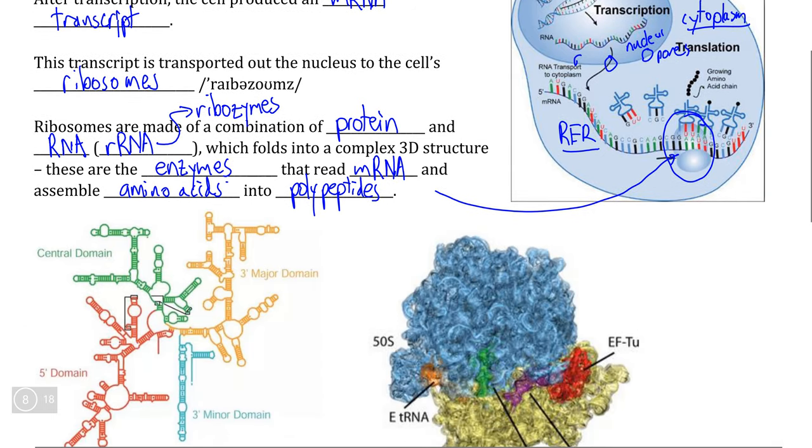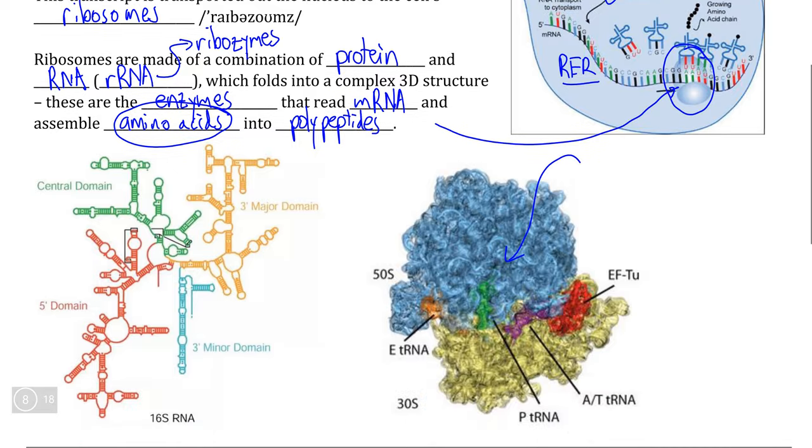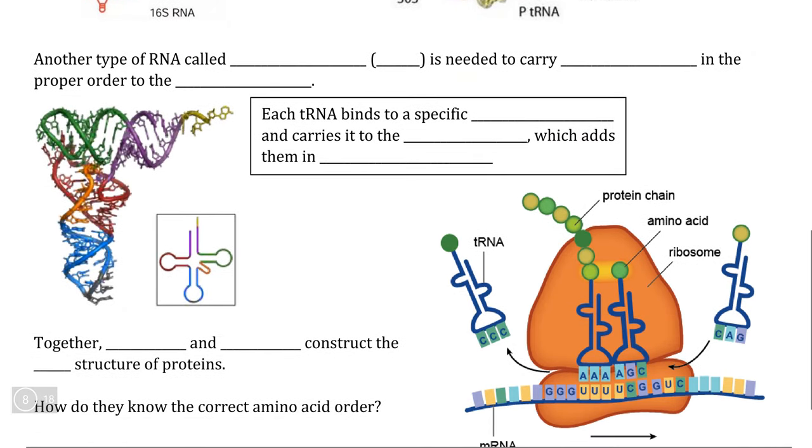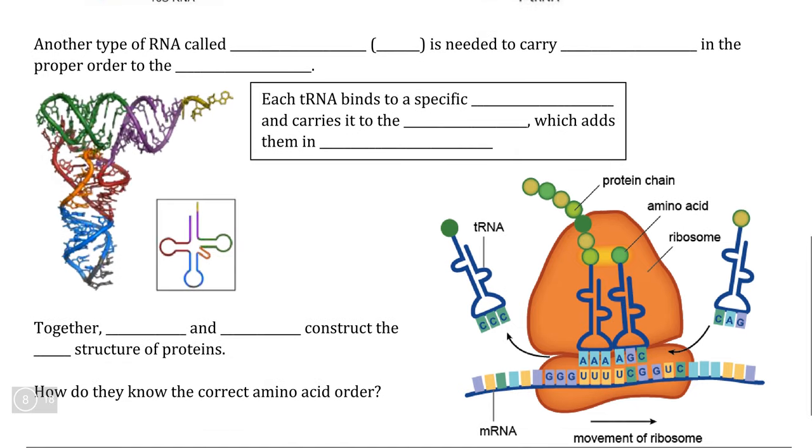For starters, how do we know which amino acids are supposed to enter the ribosome and attach at specific times? Well, that brings us to a different form of RNA that is used to do this exact process, and this is what we call transport RNA, or simply tRNA.